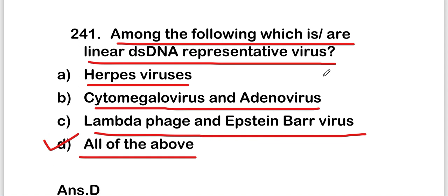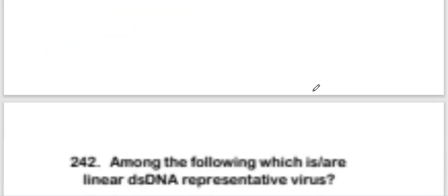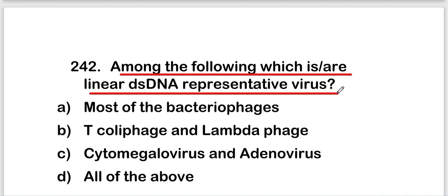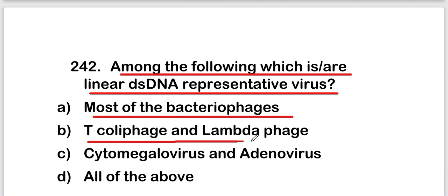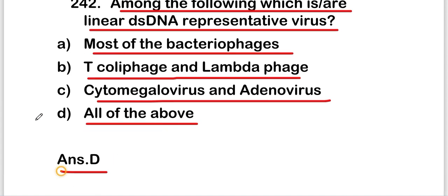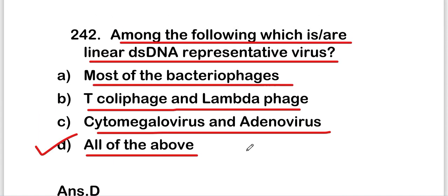The next question is: among the following, which is or are linear double-stranded DNA representative viruses? The options are most of the bacteriophages, T-coli phages and lambda phage, cytomegalovirus and adenovirus, or all of the above. The right answer is option D — all of the above. All of these viruses are linear double-stranded DNA representative viruses.